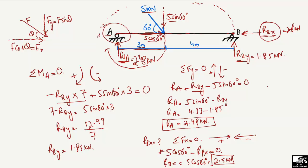So the support reactions are: R_A = 2.48 kN, R_BY = 1.85 kN, and R_BX = 2.5 kN. This is how to find the support reactions of a beam with an inclined load. Hope you guys understood — don't forget to subscribe to our channel for daily civil engineering videos. Thank you for watching.